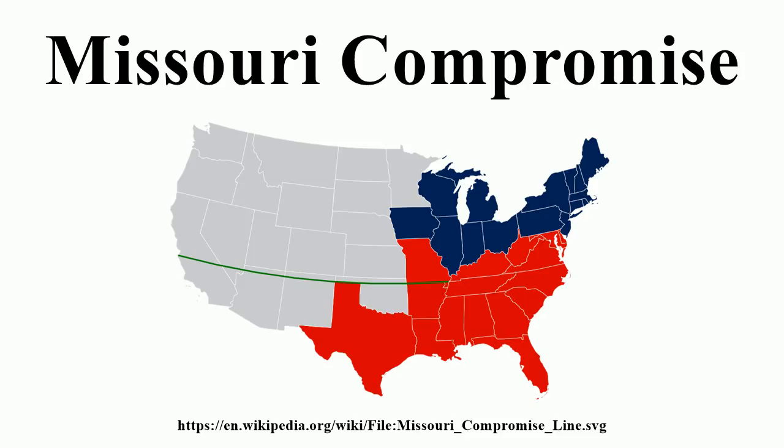On February 13, 1819, James Tallmadge of New York offered an amendment, named the Tallmadge Amendment, that forbade further introduction of slaves into Missouri, and mandated that all children of slave parents born in the state after its admission should be free at the age of 25. The committee adopted the measure and incorporated it into the bill as finally passed on February 17, 1819, by the House. The United States Senate refused to concur with the amendment, and the whole measure was lost.